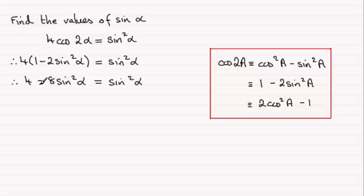And if I add 8 sine squared alpha to both sides, we end up with 4 equaling 8 sine squared alpha plus another sine squared alpha, which is 9 sine squared alpha.